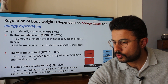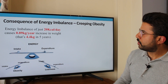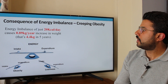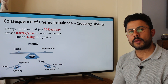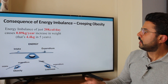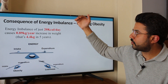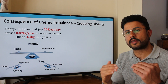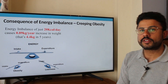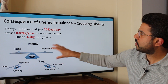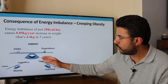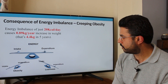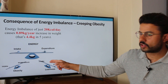Essentially, what we're trying to do with energy intake and expenditure is balance these two variables. If you have an energy imbalance of just 20 kilocalories a day, that can lead to about 0.9 kilogram per year increase in weight — equating to about 4.4 kilos over five years. That's quite a small imbalance, but you can see the energy balance equation is straightforward: if your intake is greater than your expenditure, you're heading towards obesity, and vice versa.